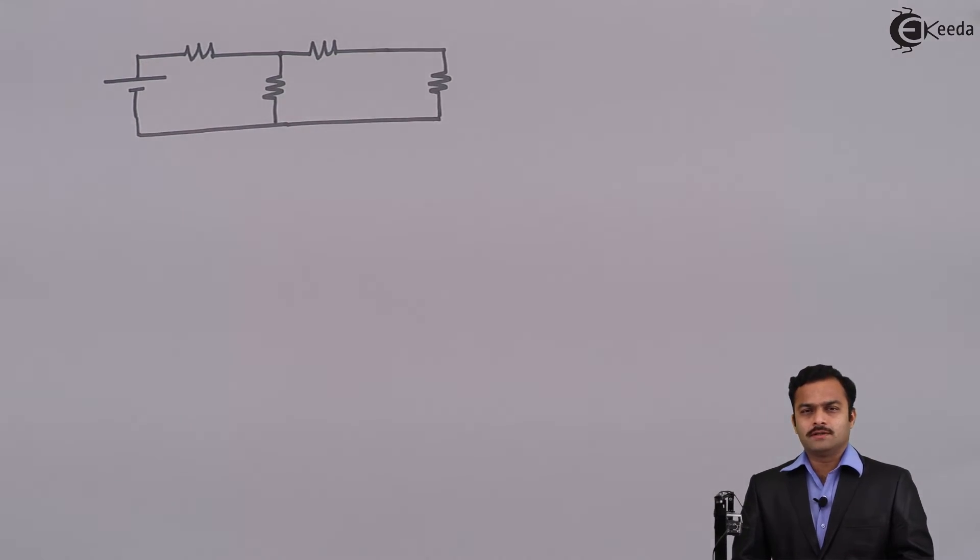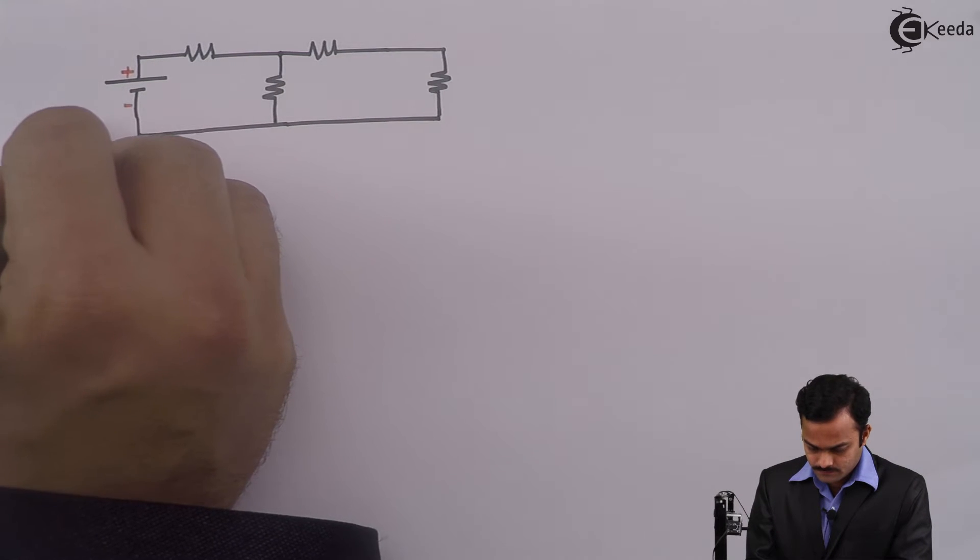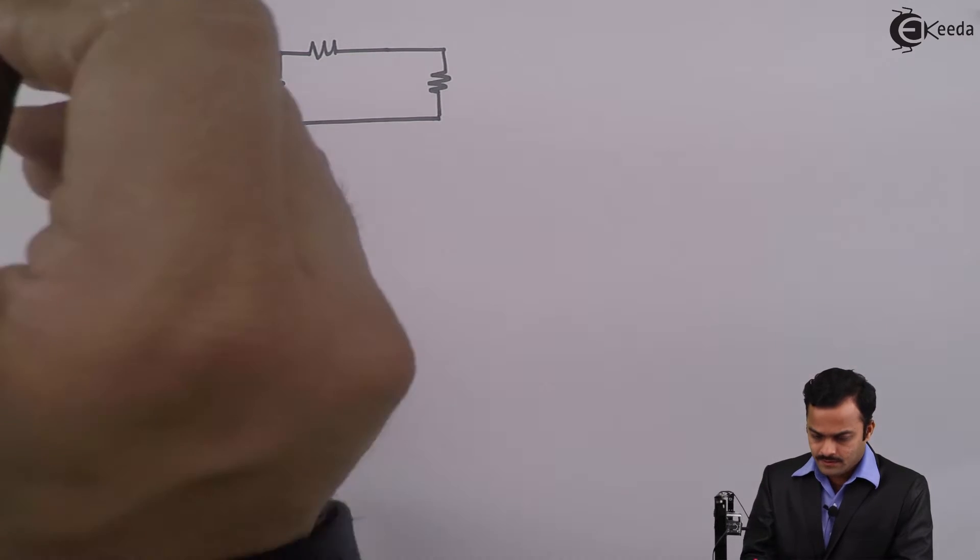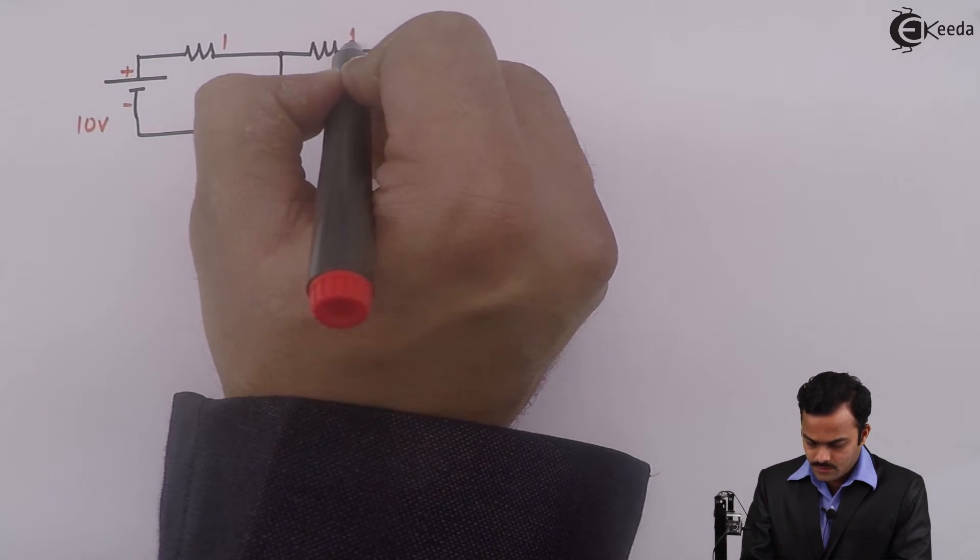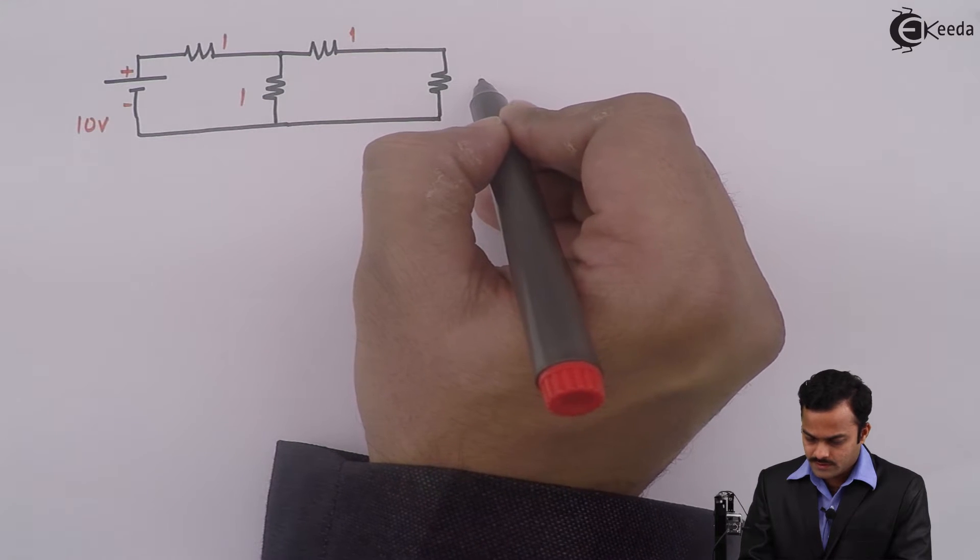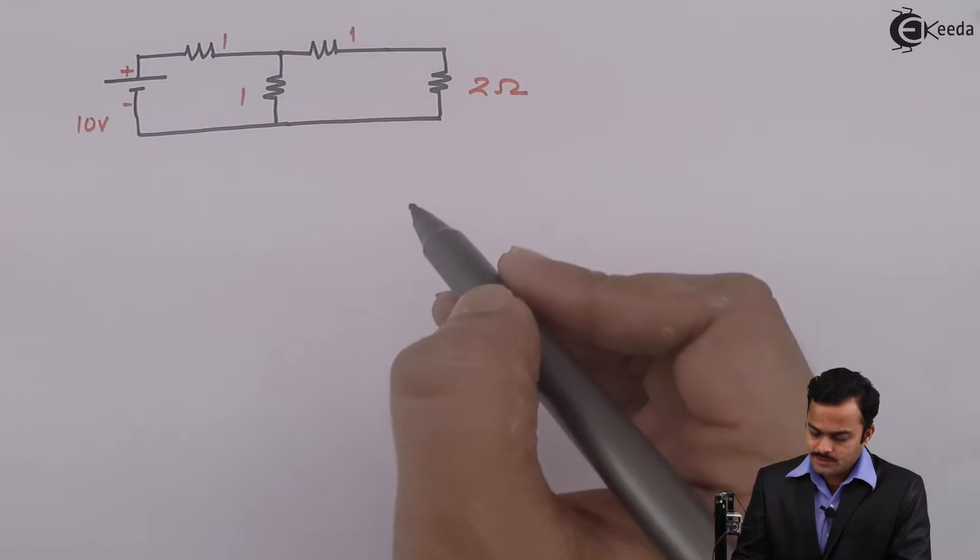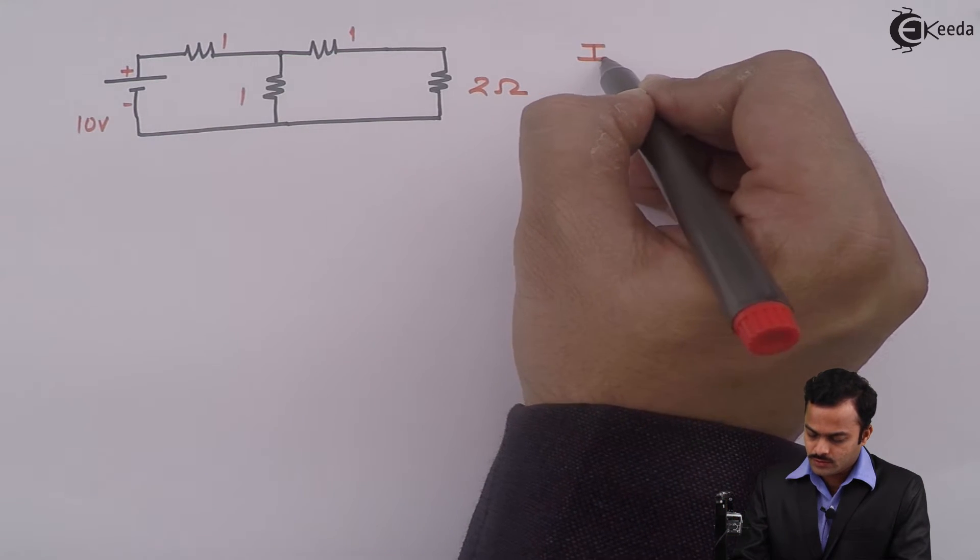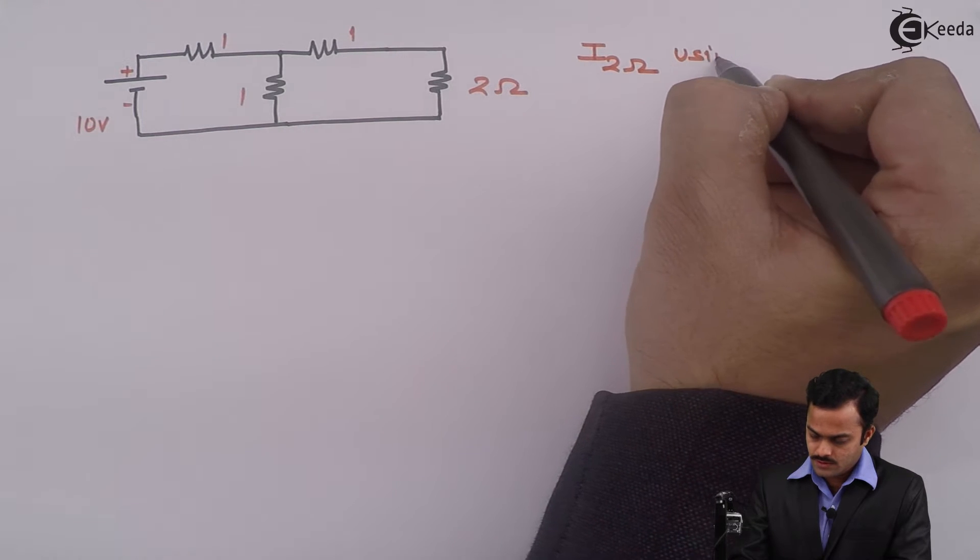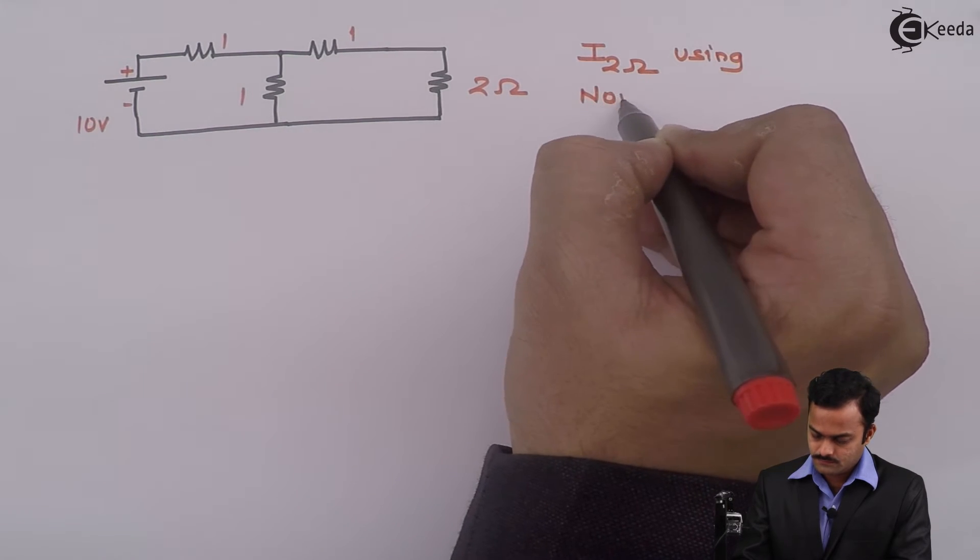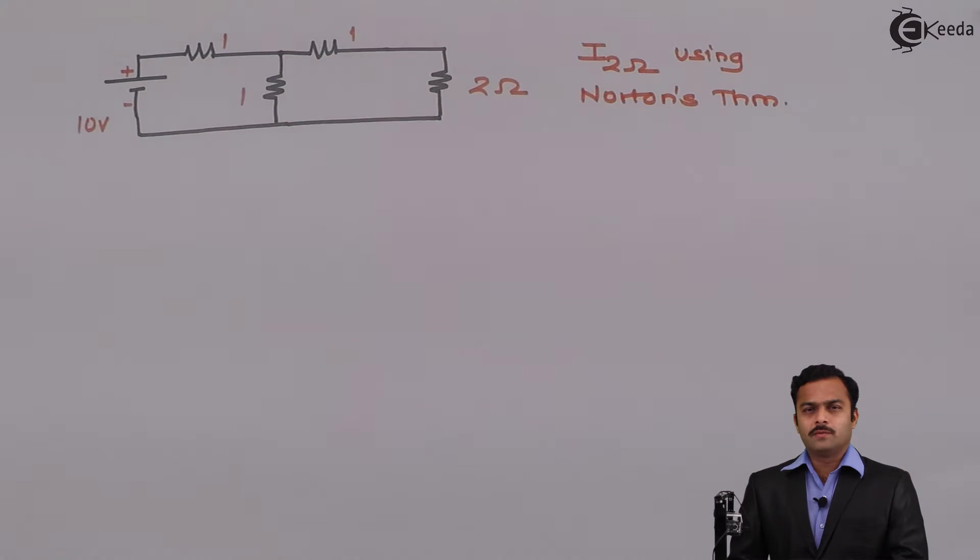I've taken a very simple numerical having only a voltage source of 10 volts and resistances. This is one ohm, one ohm, this is also one ohm, and this resistance you will have as two ohm. The objective is to get current flowing through the two ohm resistance using Norton's theorem. So it's a very simple numerical.